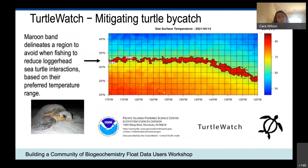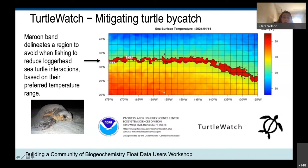An example of conservation efforts is the TurtleWatch program run out of the Pacific Islands Fishery Science Center, which aims to mitigate turtle bycatch. Bycatch — the incidental catch of other living resources — is a big issue in fisheries, and in the Pacific many fisheries are shut down if they catch too many turtles. We have developed a satellite-based SST index to indicate where turtles are likely to be, shown as a red band on the map, serving as a warning to fishers that there is a higher likelihood of turtle interactions in that area.